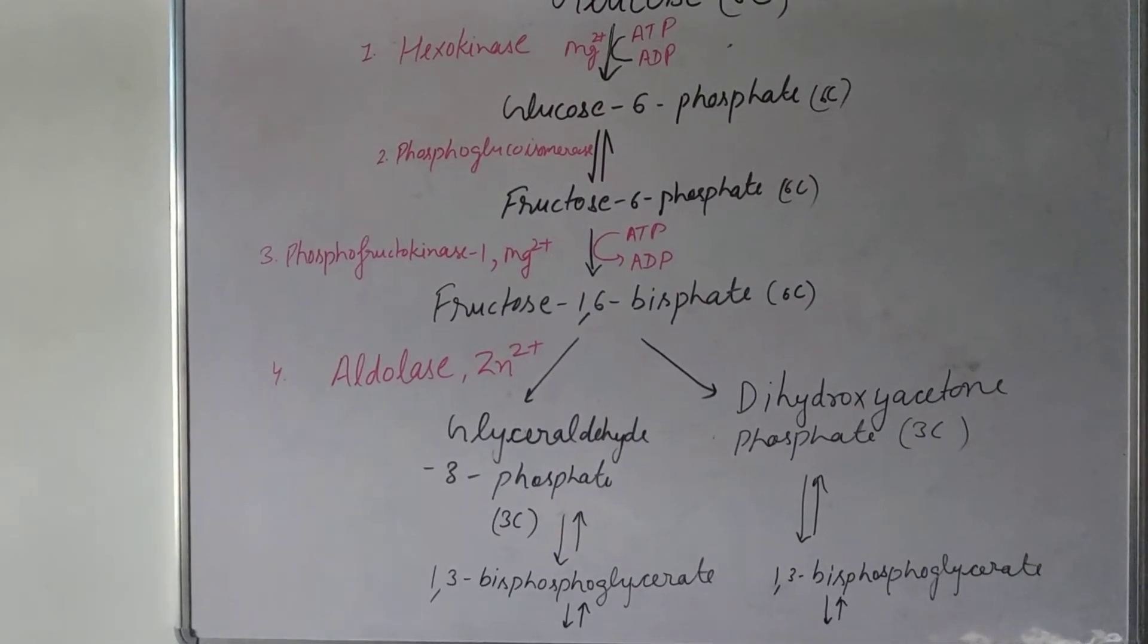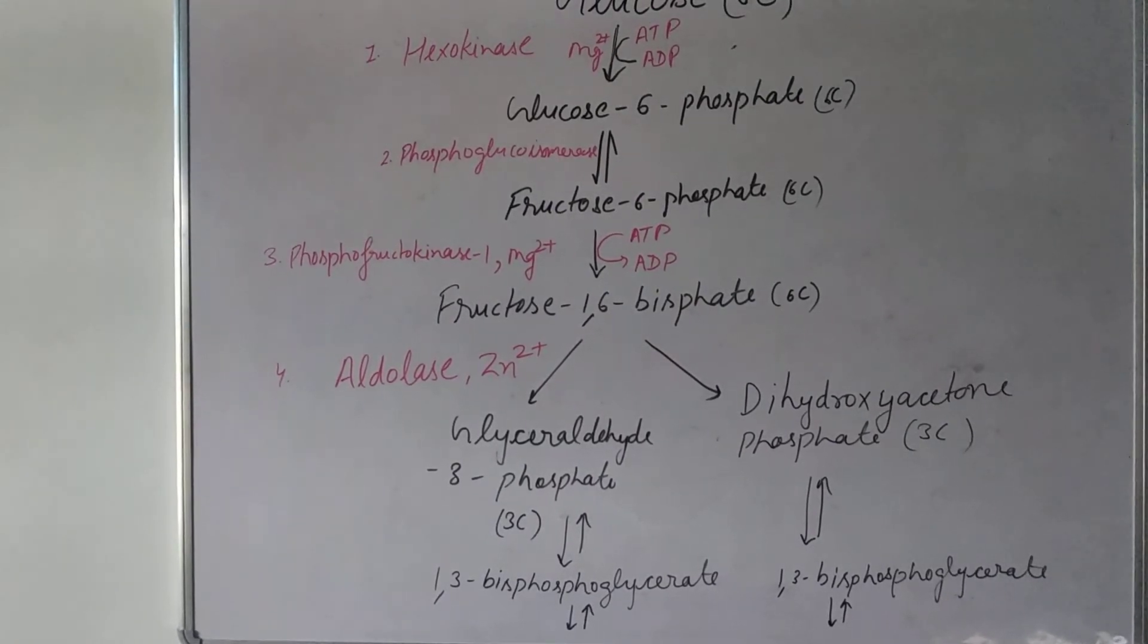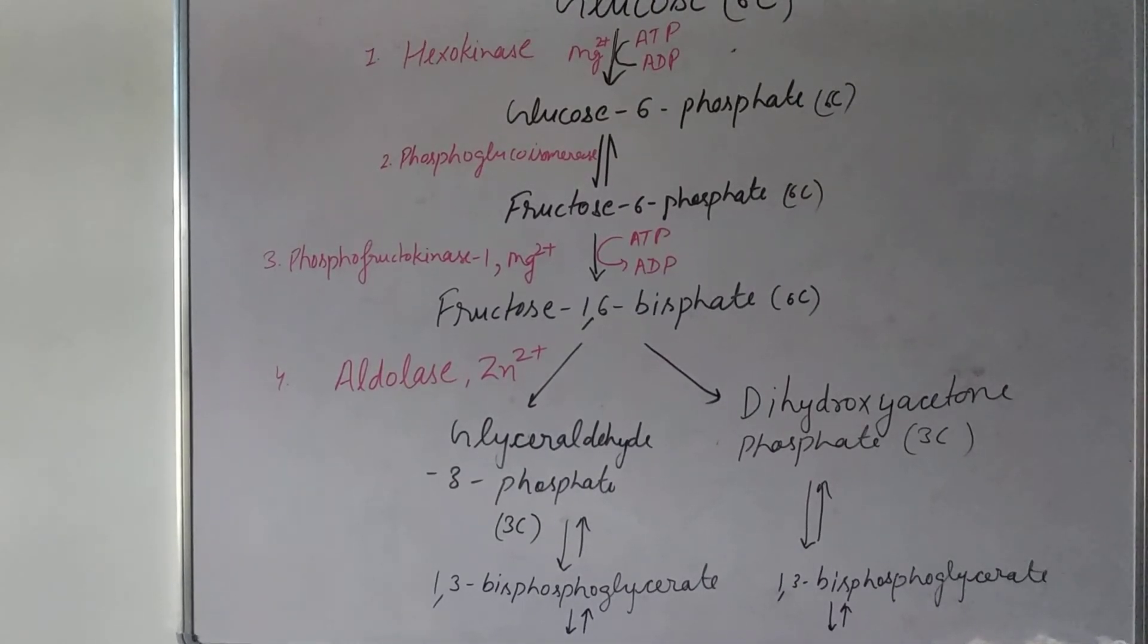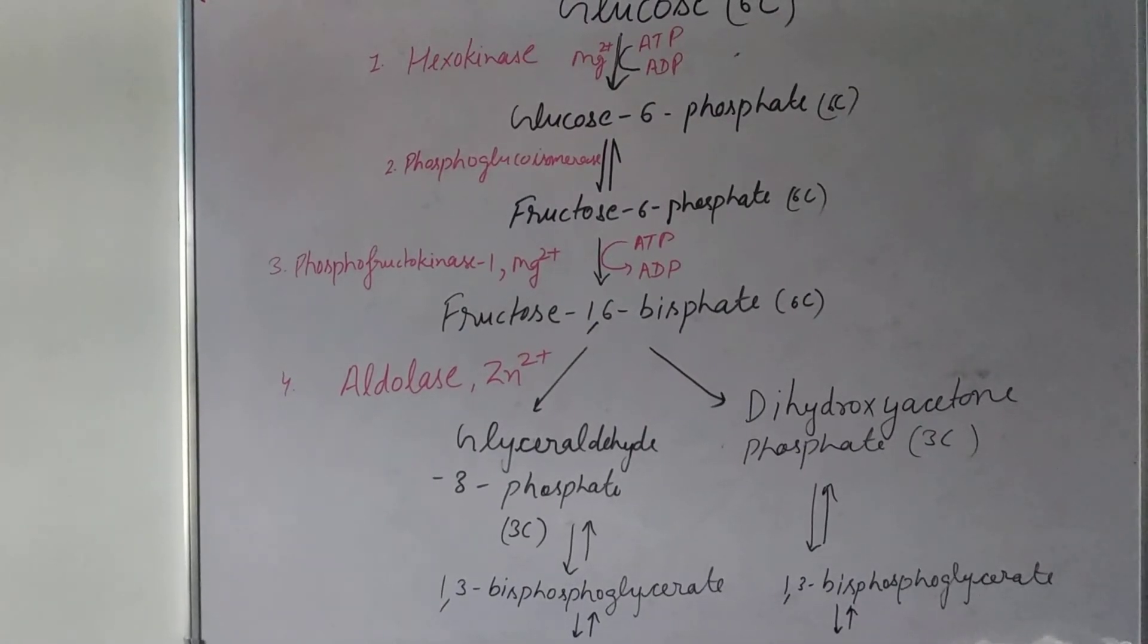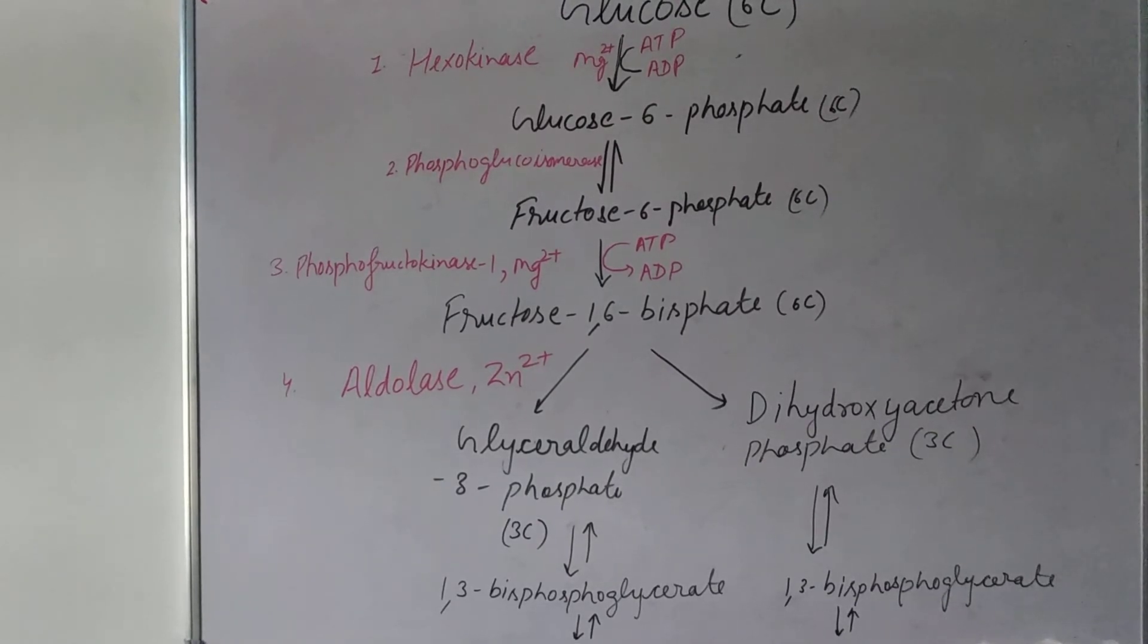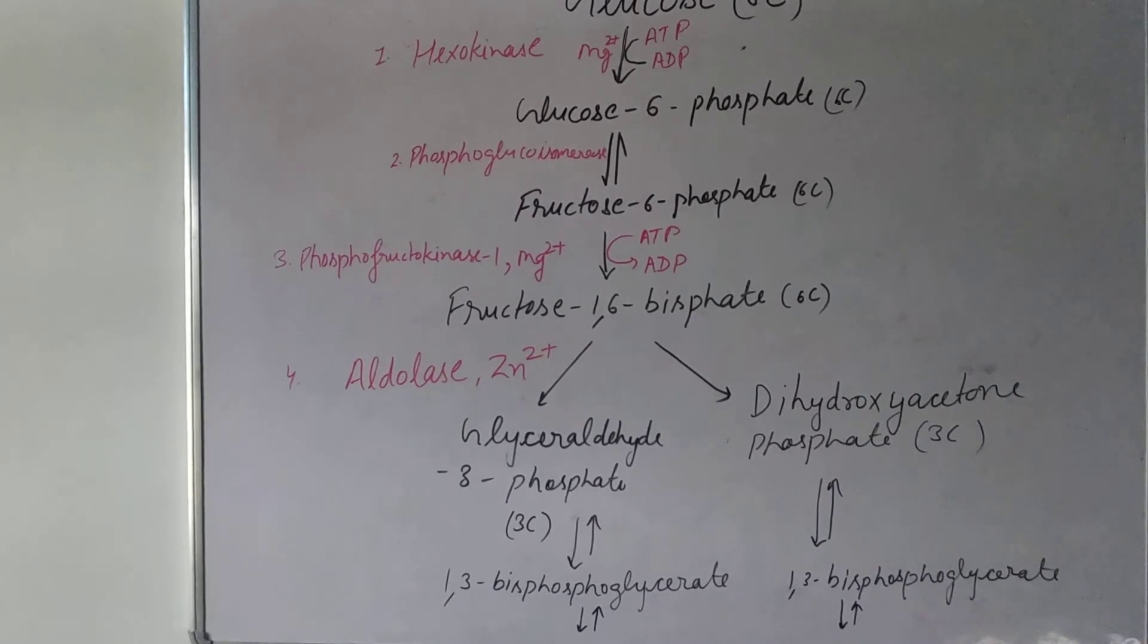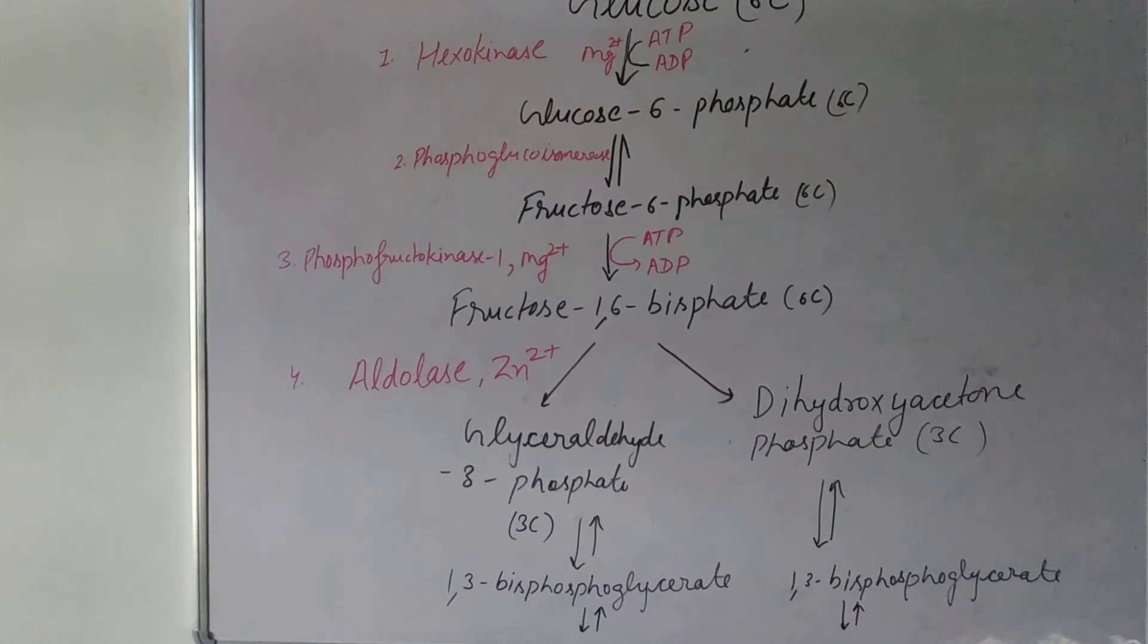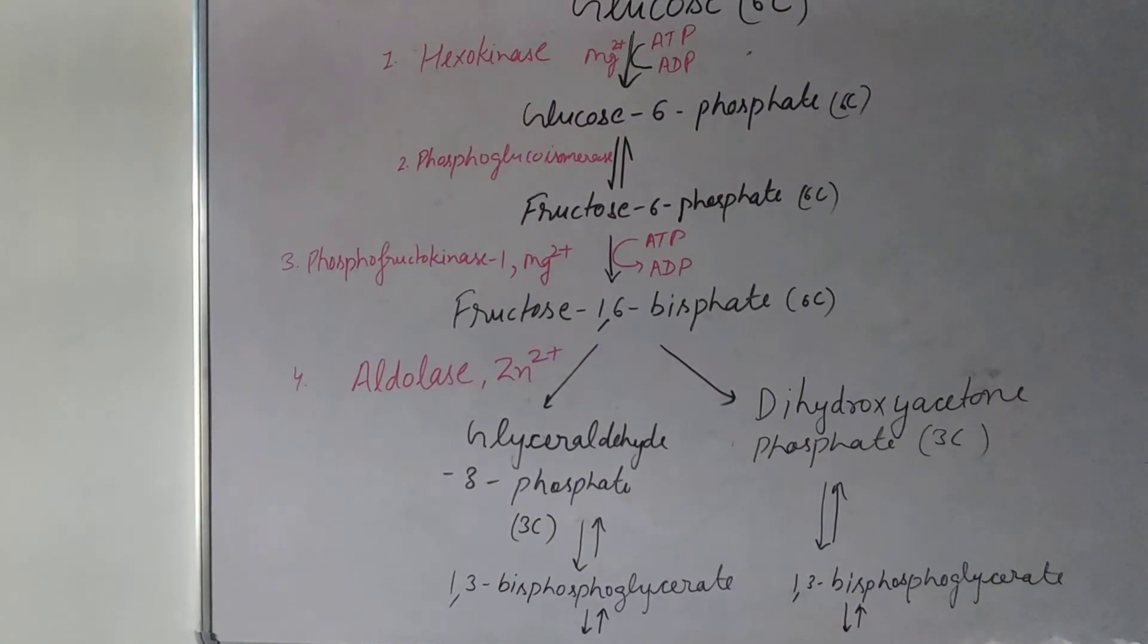You can see one is called the aldehyde group, and the other one is the ketone group. The main compounds are glyceraldehyde 3-phosphate and dihydroxyacetone-phosphate.